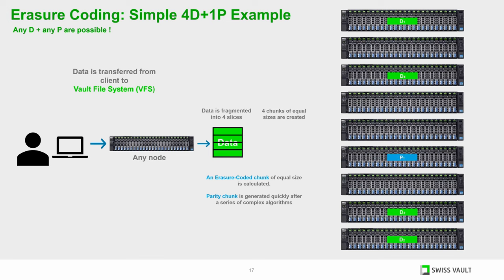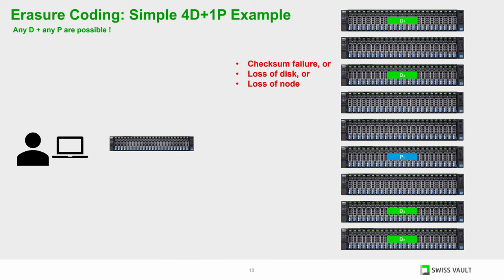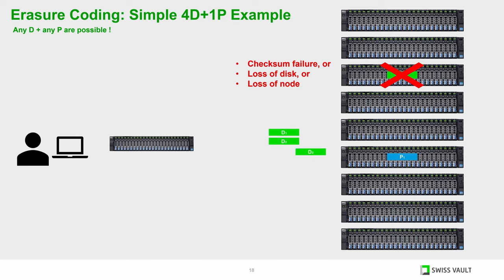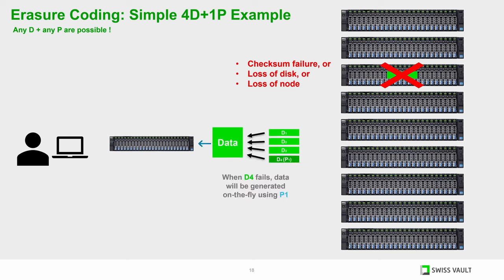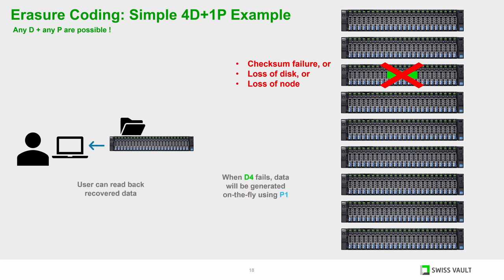Here we animate a 4 plus 1 configuration of storing data and parity chunks. Data centers routinely experience loss of disks and servers, file corruption, bit rot, or other errors that prevent data retrieval. VFS compensates by rebuilding data on the fly from the available data and parity chunks and delivering it to the user with no delays or interruptions.